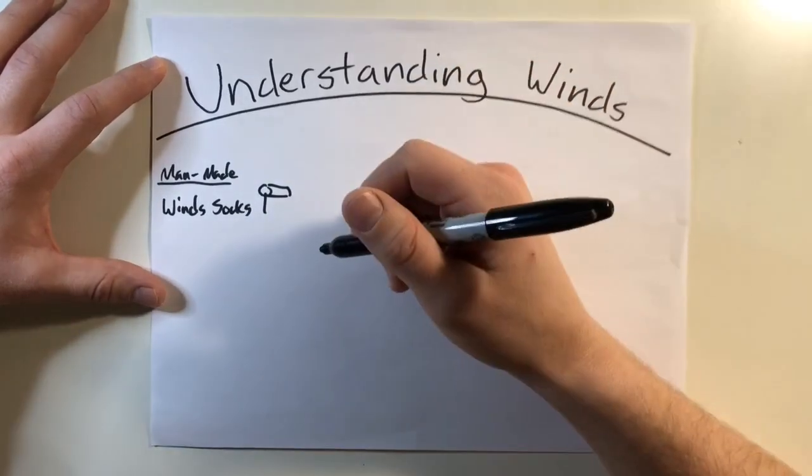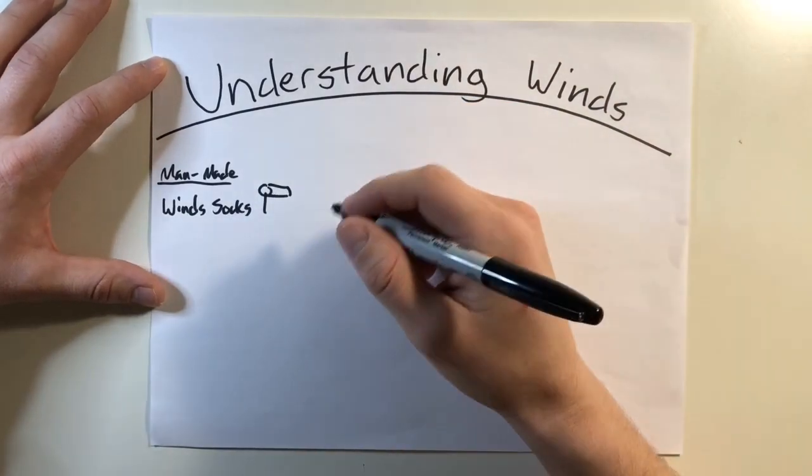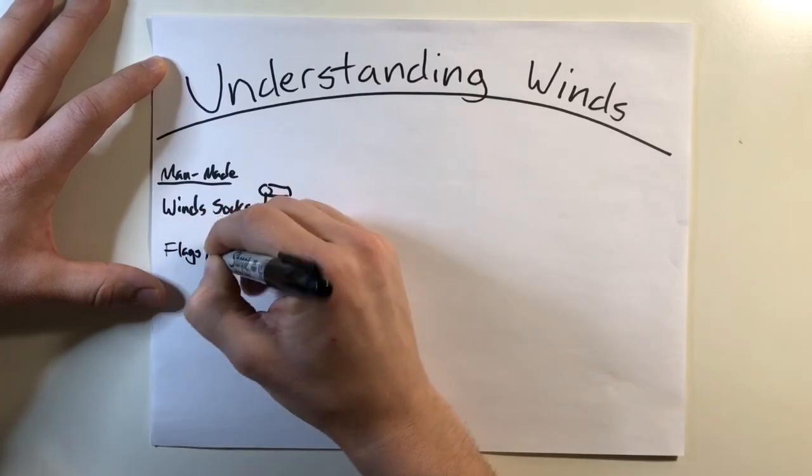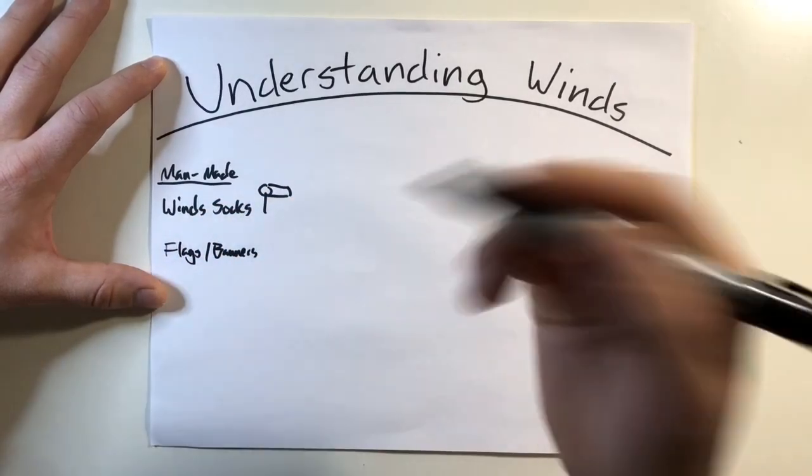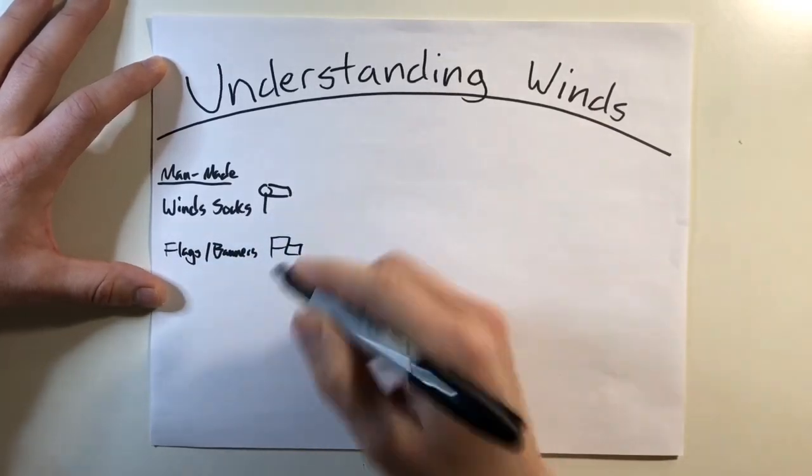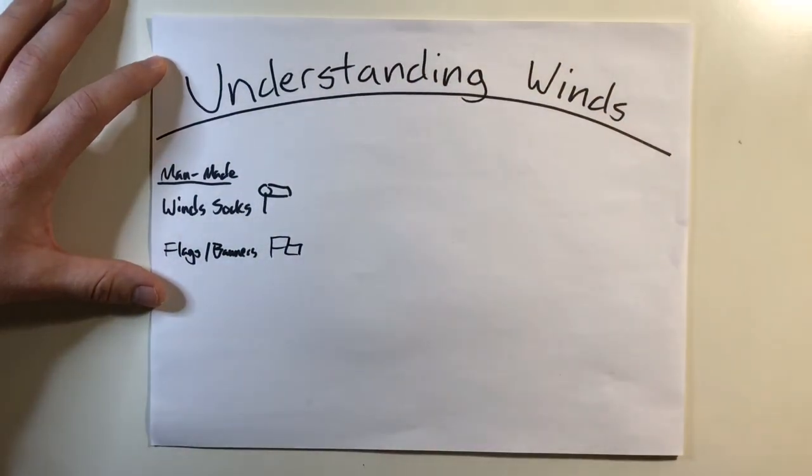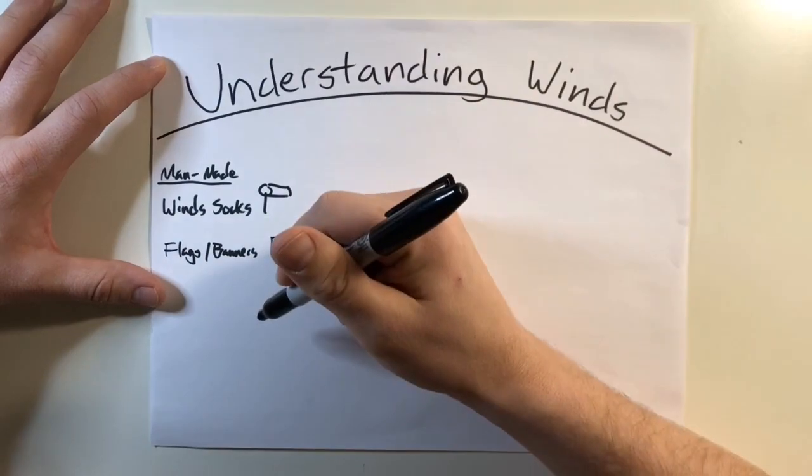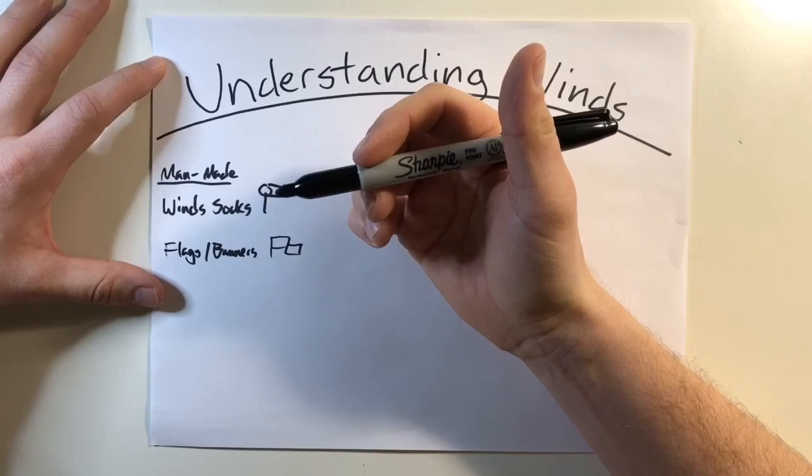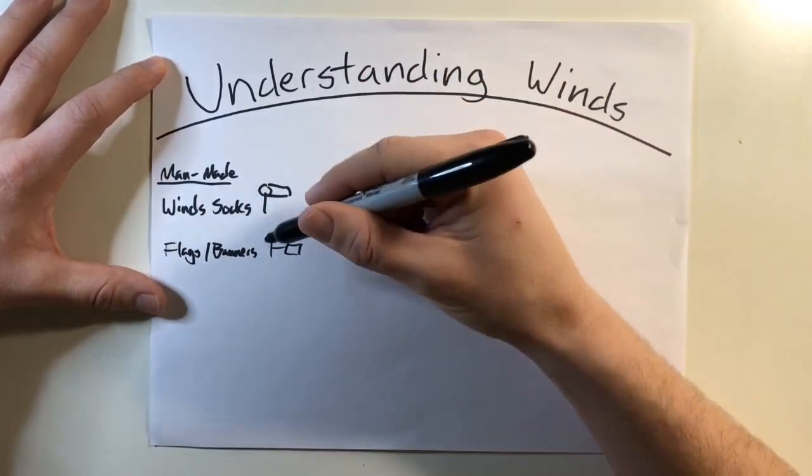But what if you're flying in an area other than an airfield and there's no windsock available? Well, some other man-made indications for wind could be things like flags or banners. These are awesome indications because they're free, they're usually all over cities. You can look down and see some flags, generally giving you the same concept as a windsock, letting you know where the winds are coming from. As a pilot, especially a helicopter pilot, you should train yourself to always be monitoring for signs like this.